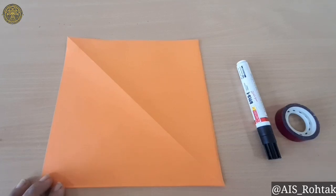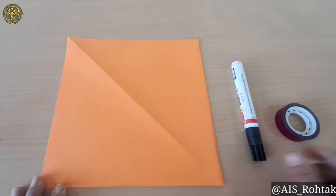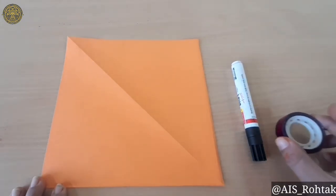In paper folding craft, I am going to make you learn origami cat. For this craft, the material you require is one square shape sheet, one black marker, and any circle shape object by which you can make circles.